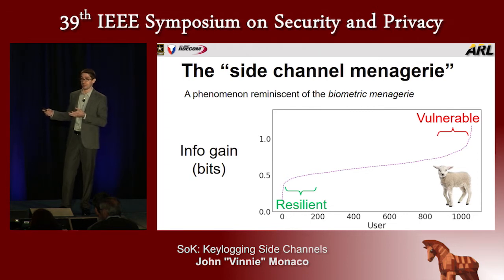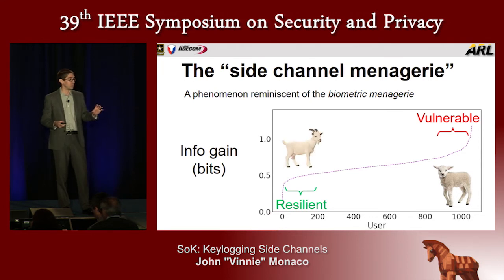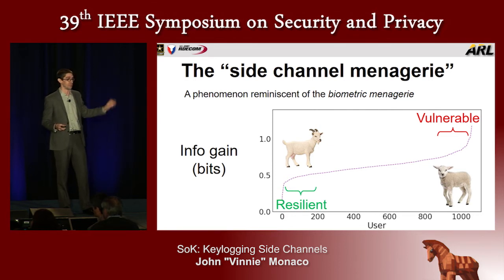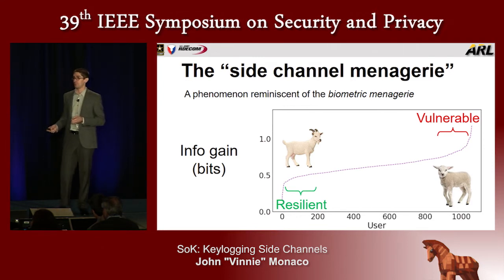In the biometric menagerie, the lambs are those users who are easy to impersonate. In our side channel attack, the lambs are users who are relatively vulnerable to attack — we can gain a lot of information per latency. The goats in a biometric system are users who have difficulty authenticating as themselves, with low genuine match scores. In our side channel attack, the goats are users who are relatively resilient to attack — so it's actually good to be a side channel goat. There's a correspondence between biometric animal types and side channel animal types. I have a poster that examines this relationship in more detail.